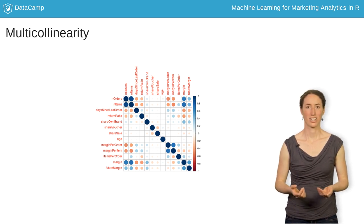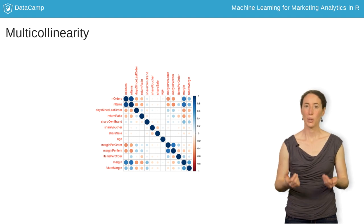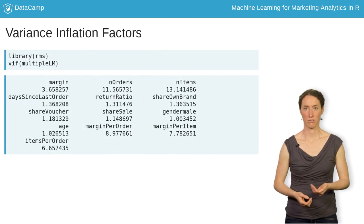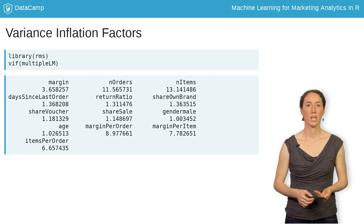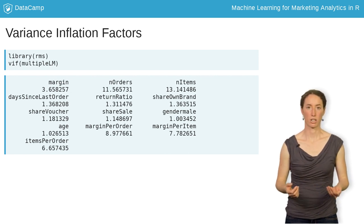To systematically check all variables in a model for multicollinearity, we calculate the variance inflation factors using the vif function from the rms package.